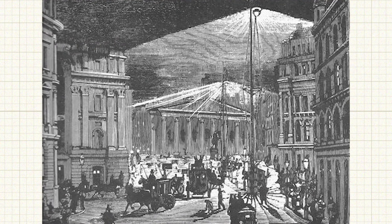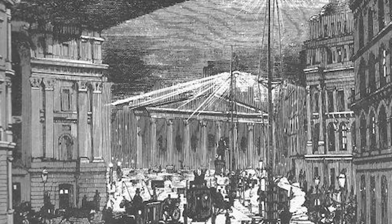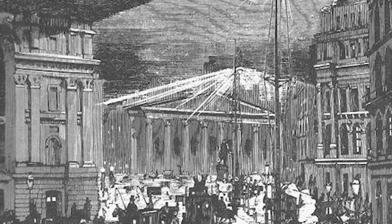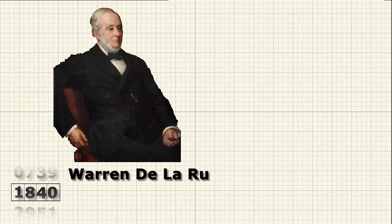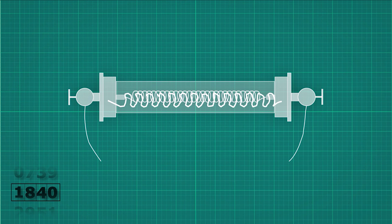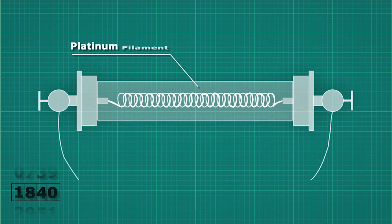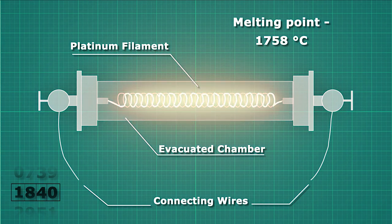Over the next 7 decades, other inventors also created light bulbs, but no design emerged for commercial application, most notably in 1840. A British scientist Warren De La Rue enclosed a platinum coil in a vacuum tube and passed an electric current through it, thus creating one of the world's first incandescent light bulbs. The design was based on the concept that the high melting point of platinum would allow it to operate at high temperatures and that the evacuated chamber would contain fewer gas molecules to react with the platinum, improving its longevity.